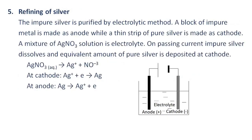Refining of silver: The impure silver is purified by the electrolytic method. A block of impure metal is made as the anode, while a thin strip of pure silver is made as the cathode. A silver nitrate solution is used as the electrolyte. On passing current, impure silver dissolves and an equivalent amount of pure silver is deposited at the cathode.